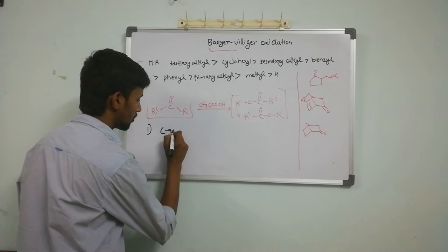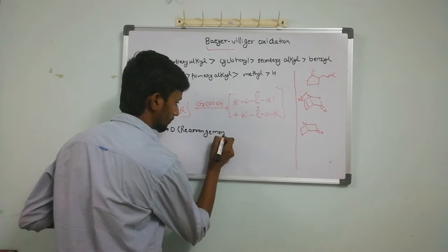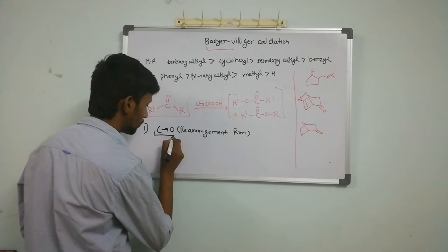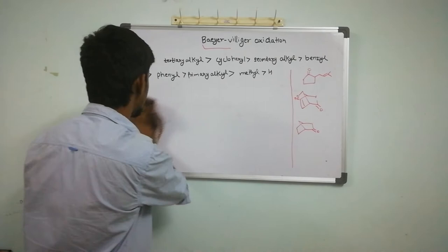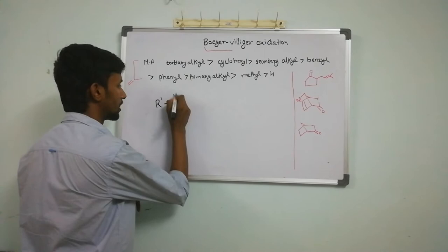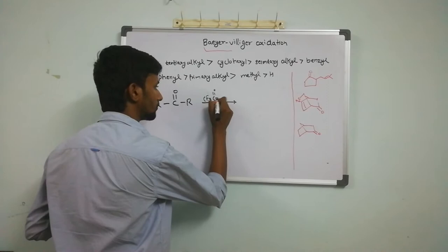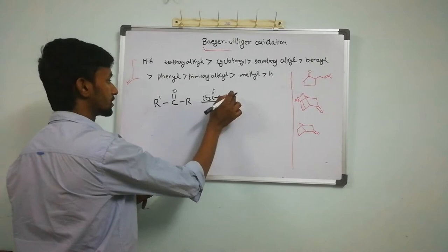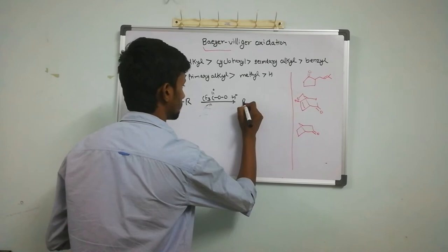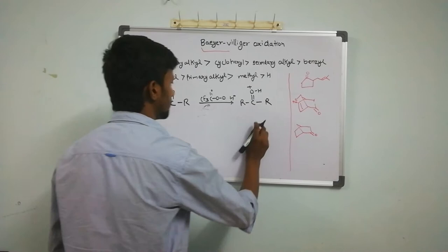First of all, it is a carbon-to-oxygen rearrangement type of reaction. If we go through the mechanism: suppose we have R' and we take a peracid. Since this acid is very strong, protonation and removal of hydrogen takes place — the proton attacks the oxygen, meaning protonation occurs. Due to this, the electrophilicity of the carbonyl carbon increases, and there will be a nucleophilic attack on this carbon center.